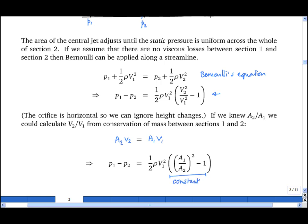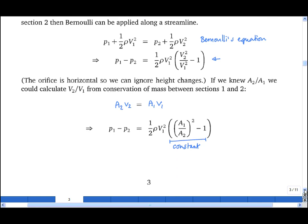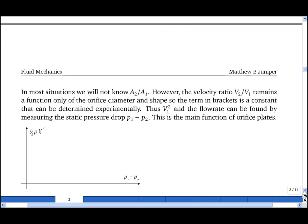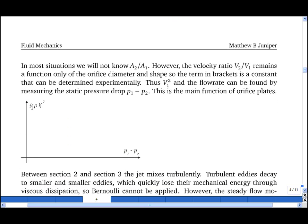Now in most situations we won't know A1 over A2. However, this is a constant that can be measured experimentally. And so to calibrate our orifice plate, we conduct a set of experiments in which we set V1, and then measure P1 minus P2, and then we plot P1 minus P2 against a half rho V1 squared. Once we've calibrated the orifice plate, we can then measure P1 minus P2 in order to work out what V1 is going through the pipe.